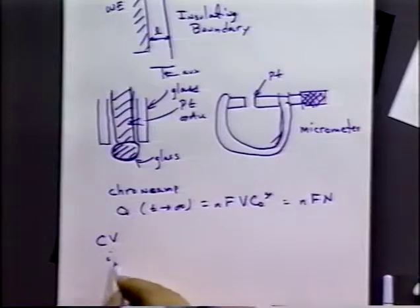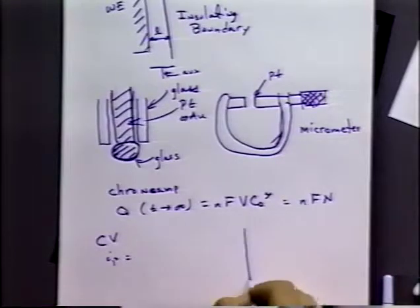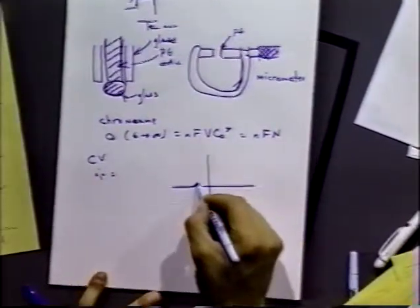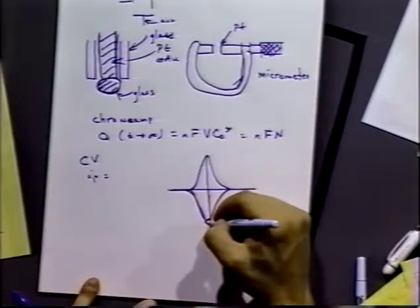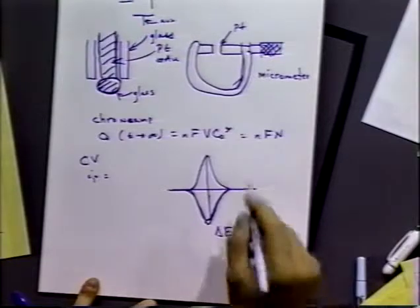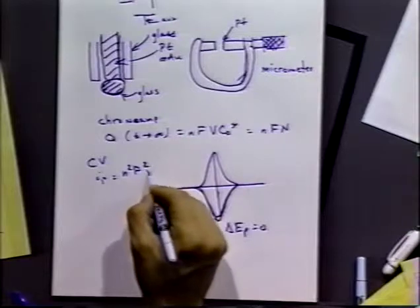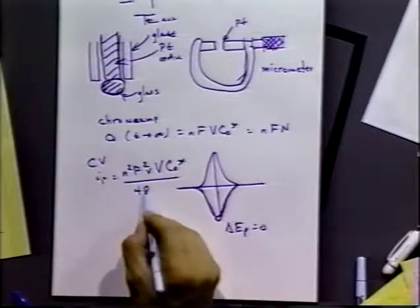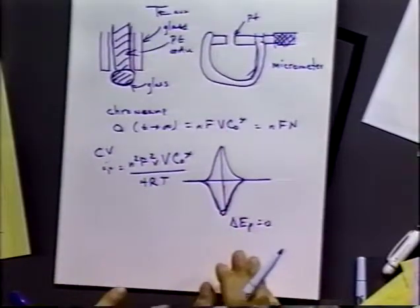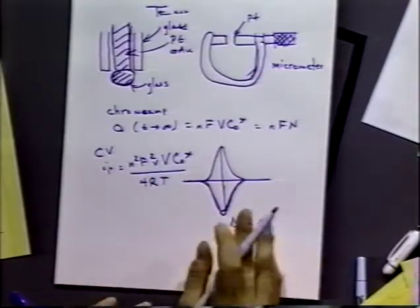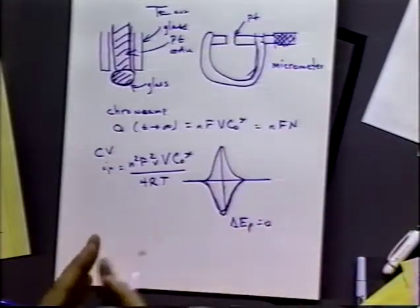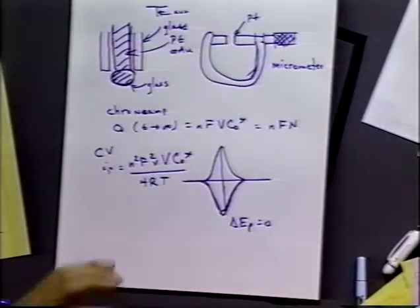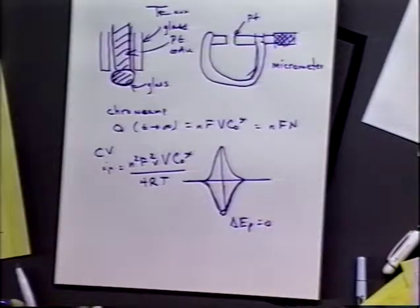If you do cyclic voltammetry and the system is reversible, you get basically thin layer type behavior — similar to adsorbed molecules. You get Gaussian-shaped peaks; if drawn correctly, you'd see symmetric peaks with ΔEp equal to zero. The peak current is N²F²V times the volume times C₀* over 4RT. The difference between thin layer cell behavior and adsorbed behavior is just volume and concentration — rather than an adsorbed amount, you have C₀*. With kinetics, the peaks would shift, and we can use that shift to detect kinetic parameters without worrying about mass transport.